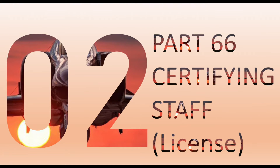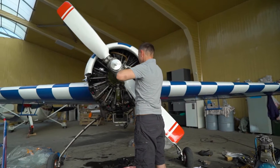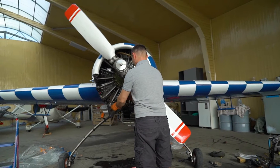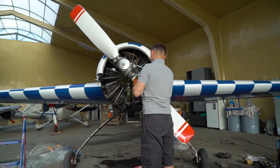Now we have the type certificate — but we also need competent people to work on the aircraft. These are core certifying staff, approved via a Part 66 license. Part 66 sets the level of competence required. These requirements must be fulfilled in order to carry out maintenance on the aircraft. Every aircraft certifying staff member must comply with Part 66 requirements to obtain the license.